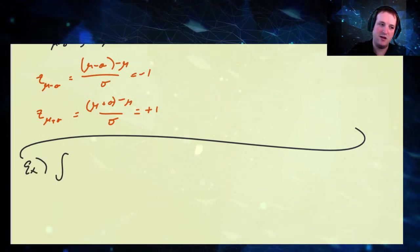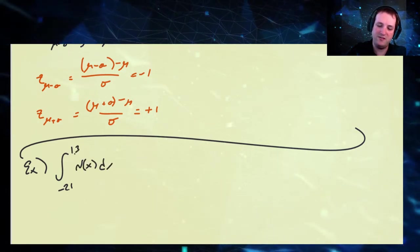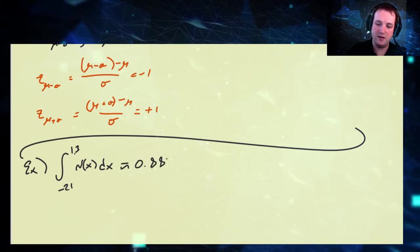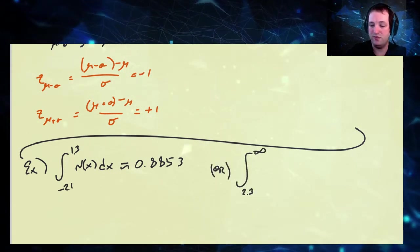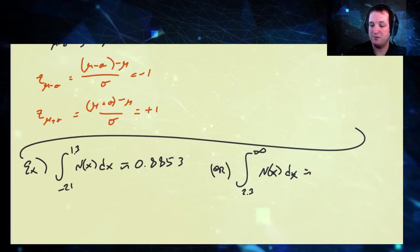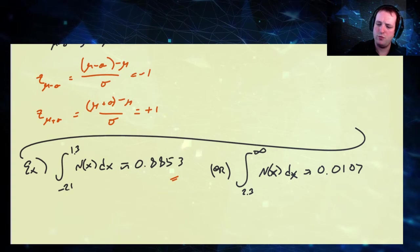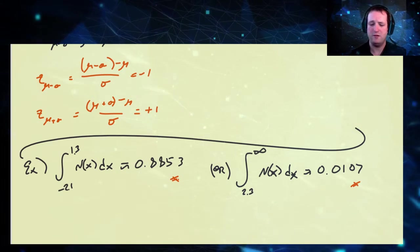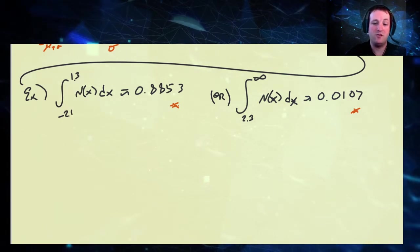Last time we discussed how we can find, via software, the integral from negative 2.1 to 1.3 of the standard normal distribution, which is approximately 0.8853. Or we can find the integral from 2.3 to infinity of the standard normal, which is approximately 0.0107. Those are two general types — finite bounds and non-bounded intervals. Now we're going to go backwards: if I give you this area, I want to find these bounds. There are several different variations of this.